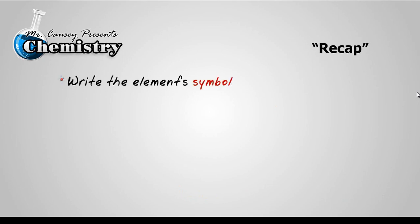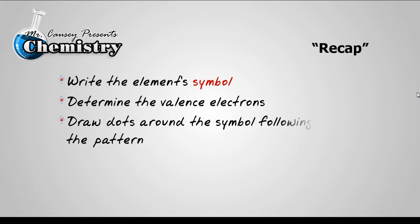Alright, let's recap. You write the element symbol. You determine the valence electrons. You then draw the dots around this symbol following the pattern that was described here in the video.